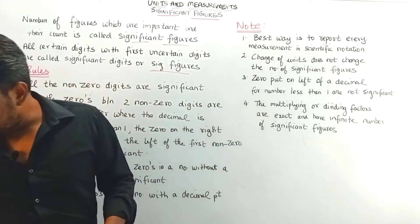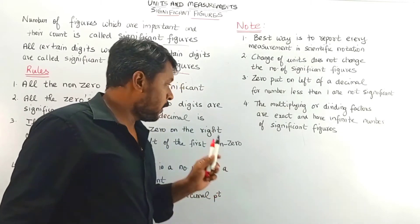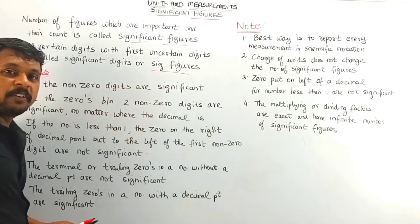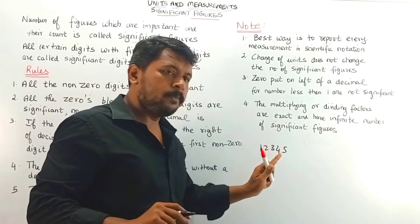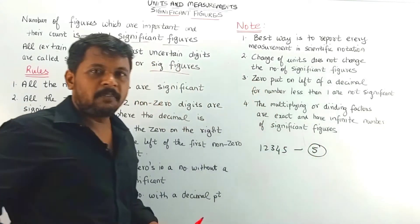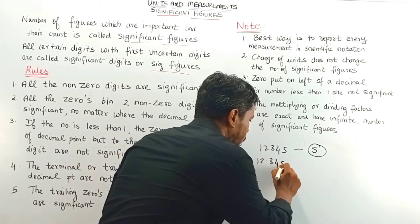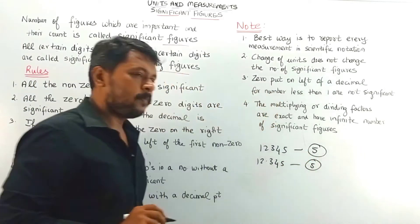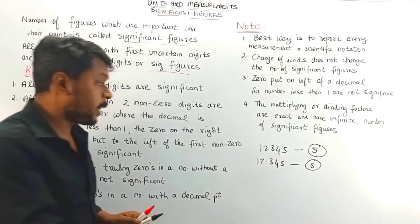Using these rules we can easily determine the number of significant figures. I will add examples for each rule. The first rule: all non-zero digits are significant. For example, 12345 — I have no zeros, so the number of significant figures is 5. Similarly, 12.345 also has 5 significant figures because there are no zeros.